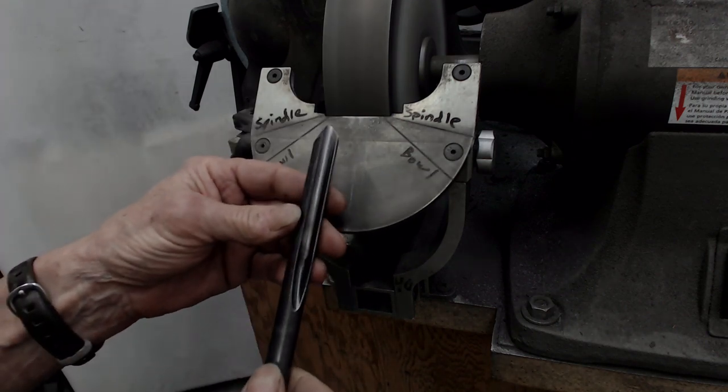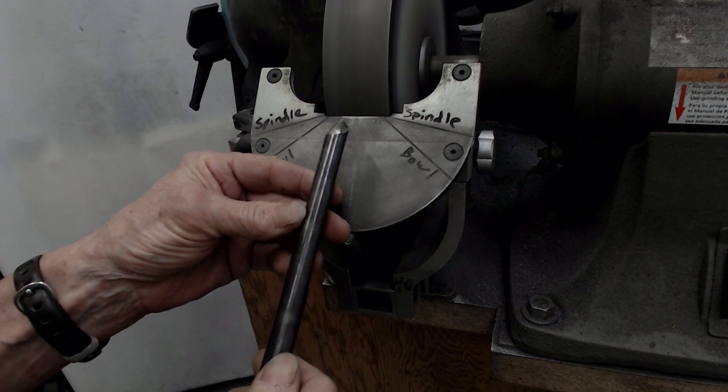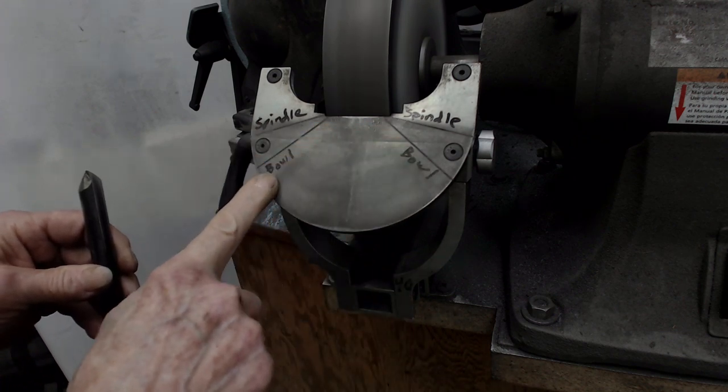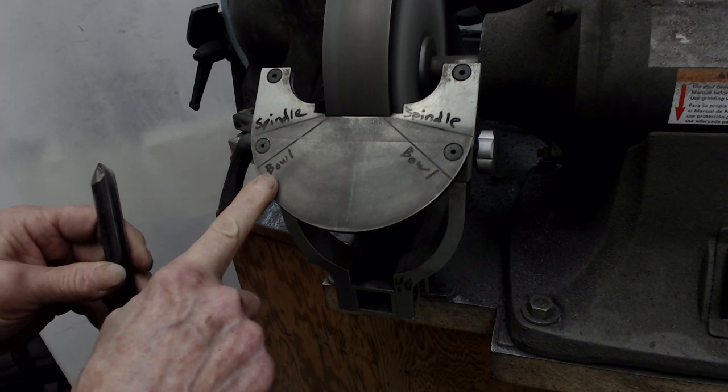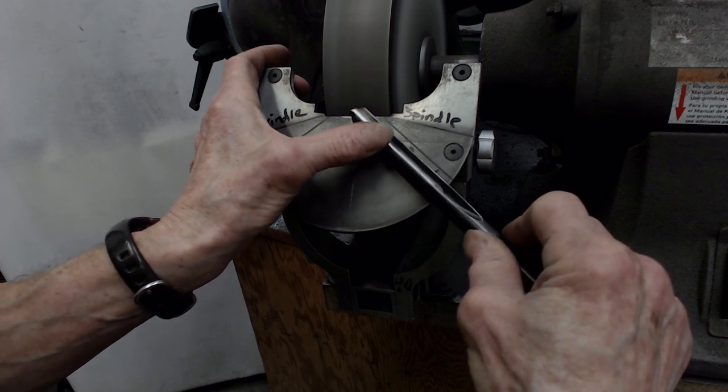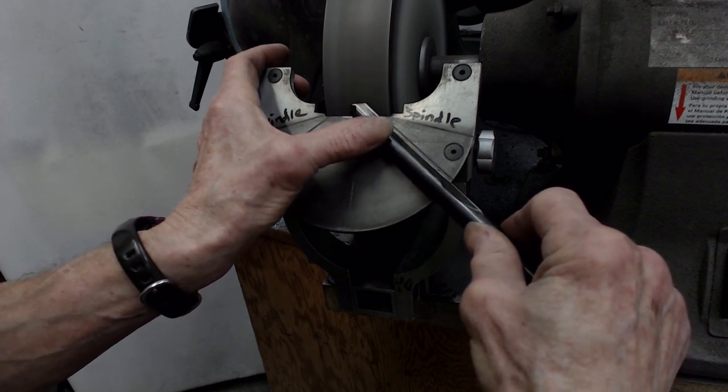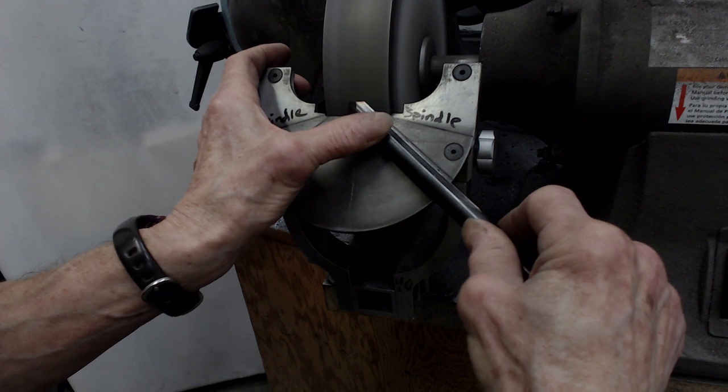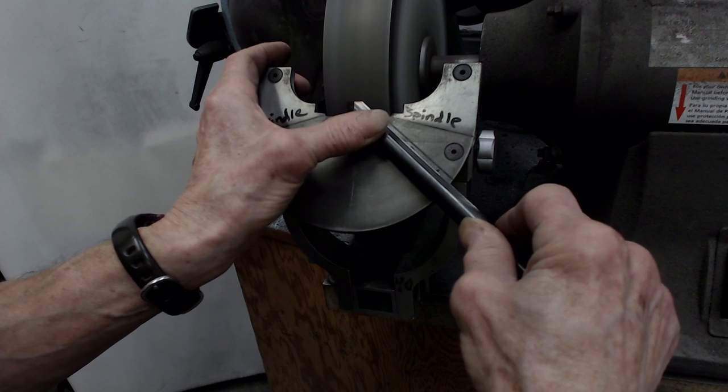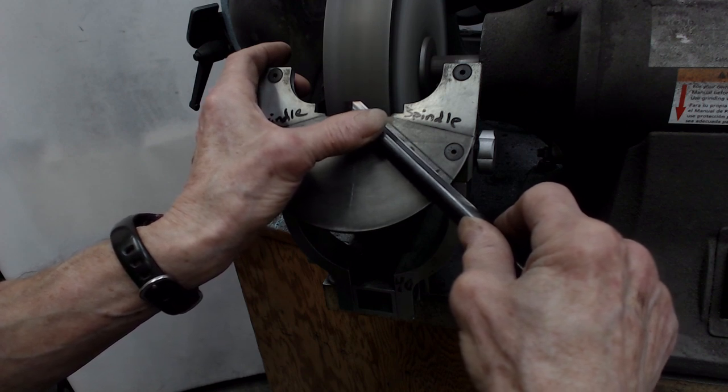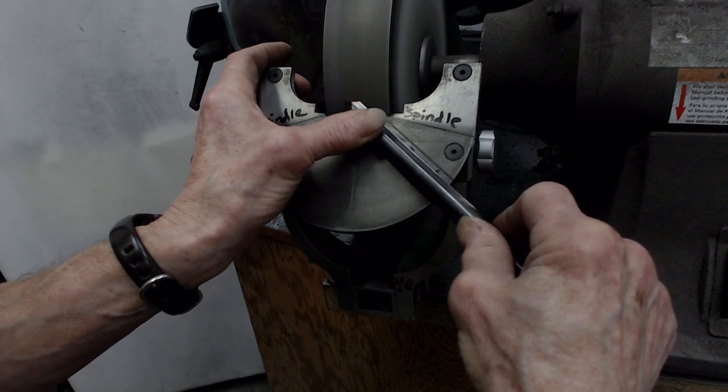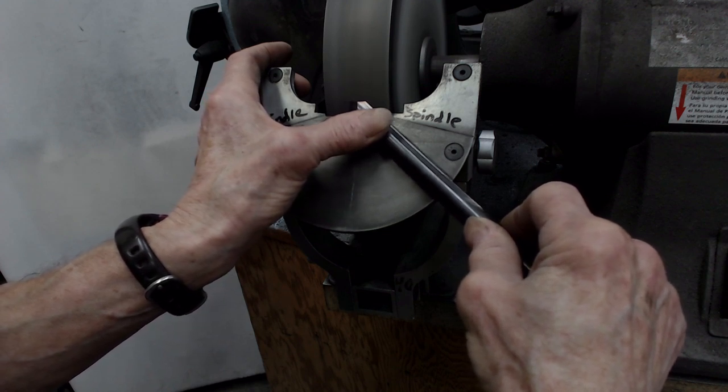For the bowl gouge, which has 40 degrees of sweep, I've drawn some sweep gauge lines on my platform. I'll sharpen my bowl gouge by aligning the tool visually parallel to the sweep line and then contacting the straight wing to the wheel. I have the tool rolled over just enough to where the inside flat surface of that flute at the wing is parallel to the platform.